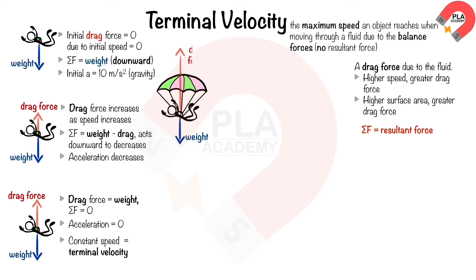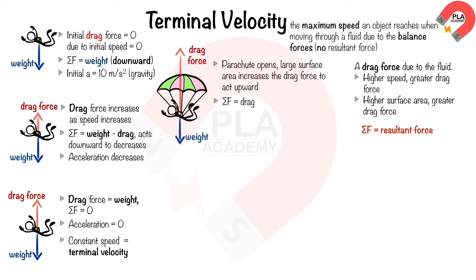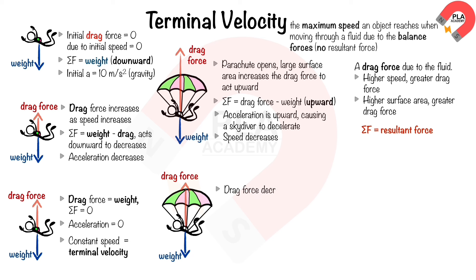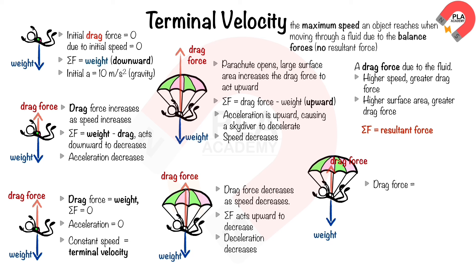When a parachute is opened, the large surface area greatly increases drag force upward. The resultant force (drag − weight) now acts upward, so the skydiver decelerates and speed decreases. As speed decreases, drag force decreases. The deceleration also decreases until drag force again equals weight, resultant force becomes zero, and the skydiver reaches a new, lower terminal velocity.